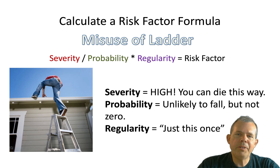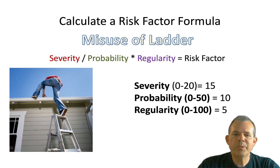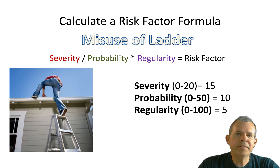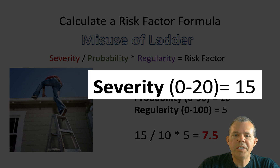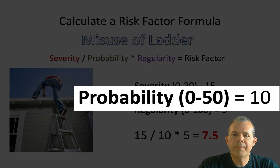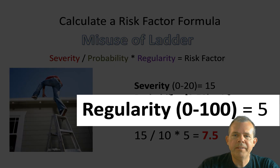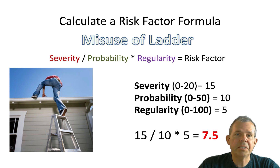And the regularity — how often do you climb up to a roof? If you are actually putting shingles on a roof for a living, the regularity is high. Otherwise, you might just say 'this one time.' So if we estimate these three values — severity, probability, and regularity — I'm going to say 15 is pretty severe, probability is pretty low, and regularity is low since we don't do this very often. The risk of dying on a ladder: I'm going to give it a 7.5. You've got to give your boss a number — not 'kind of likely.' So here's my number: 7.5.